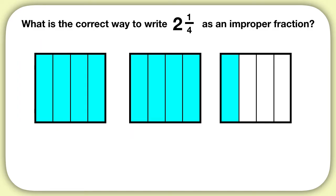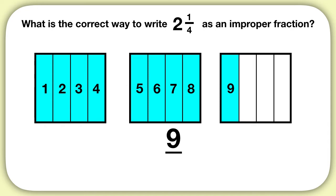Now we need to count up how many fourths we have in all. We can count that we have 9 pieces. So our numerator is 9, and remember we're working with fourths, so our denominator is 4. We can write 2 and 1 fourth as the improper fraction 9 fourths.